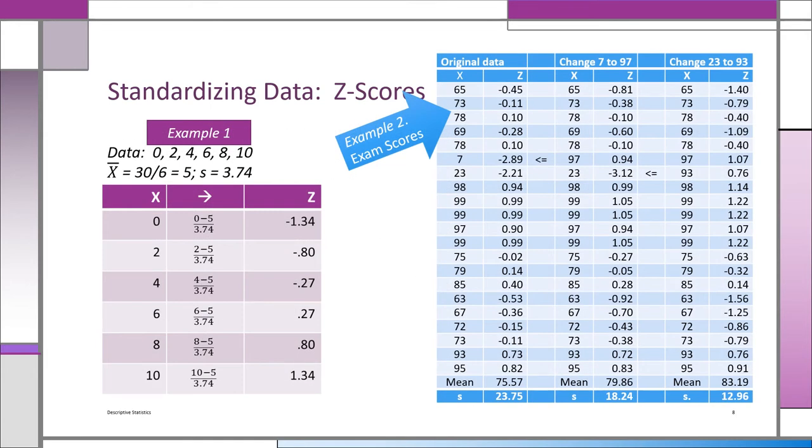Let's look at some examples of standardizing data, turning the data into Z scores. Example one: very simple data—0, 2, 4, 6, 8, 10—six data values. We have a mean of 5, standard deviation of 3.74. For each X value we can convert it into a Z with the simple transformation of X minus X bar divided by S. If you were to add those up and divide by six, you'll get zero because the mean of the standardized data is zero, and the standard deviation would be one.